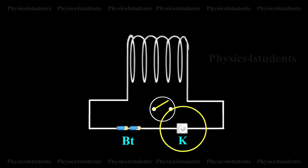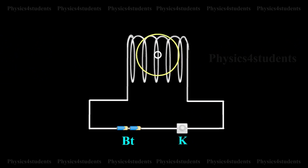On releasing the key, the current through the coil decreases to a zero value and the magnetic flux linked with the coil also decreases. According to Lenz's law, the induced current will oppose the decay of current in the coil.